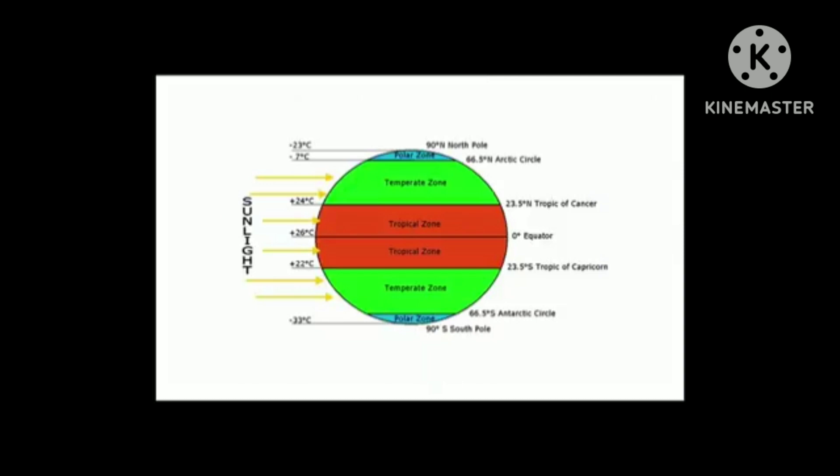So let's talk about the various zones of the earth. At 0 degree we have the equator. At 23.5 degree north we have Tropic of Cancer. At 23.5 degrees south we have Tropic of Capricorn. At 66.5 degree north we have Arctic Circle and at 66.5 degrees south we have Antarctic Circle. And not to forget this is the North Pole and this is the South Pole.